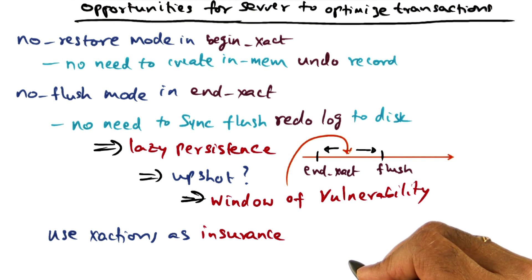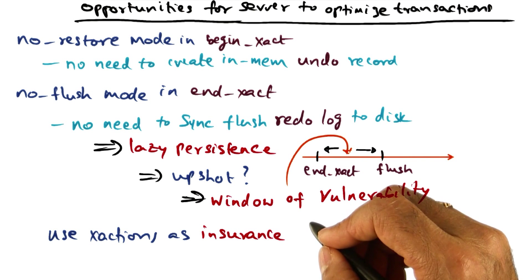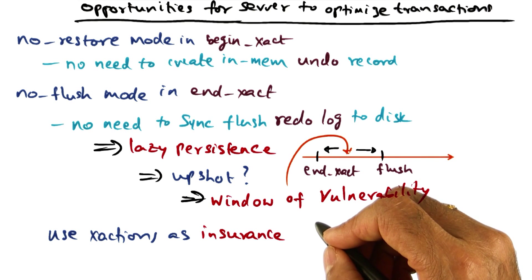And this should remind you of the old adage that we saw when we talked about shared memory systems. Shared memory systems scale really well when you don't share memory. Similarly, transactional systems scale really well, perform really well, when you don't use the full semantic requirement of transaction. In particular, if you can get rid of synchronous IO, it'll make the performance better.